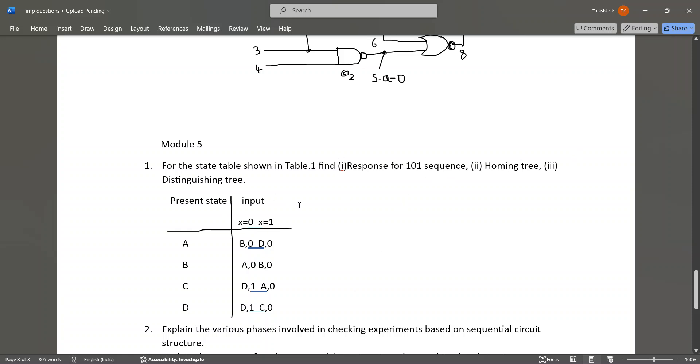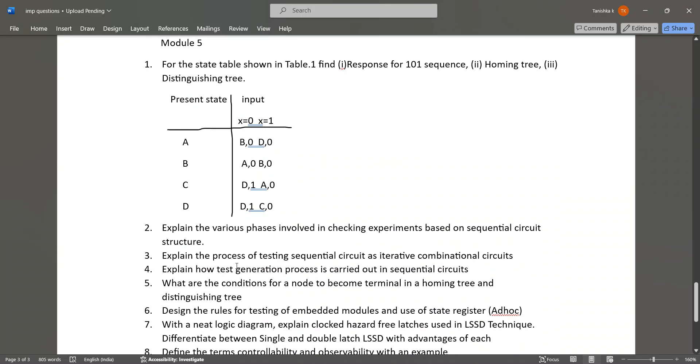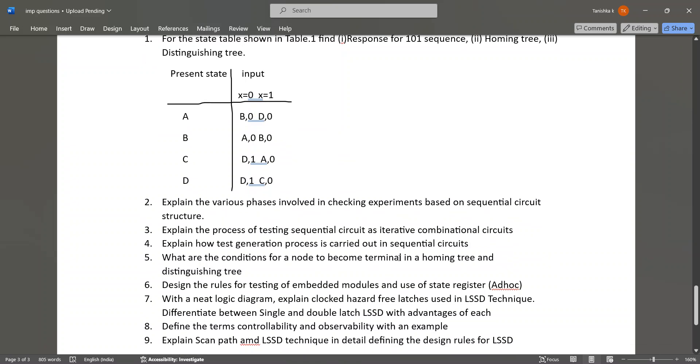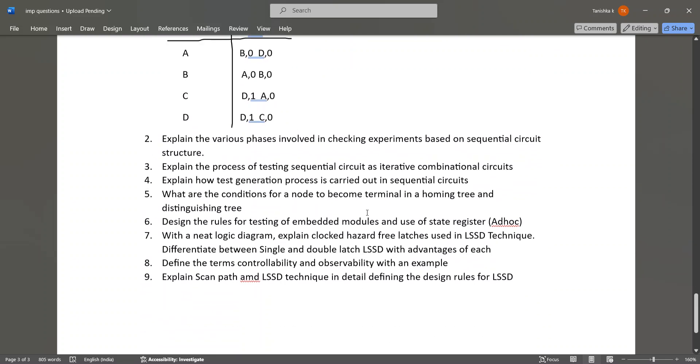Sequence and input is given. Explain the various phases involved in checking experiments based on sequential circuits. Explain the process of testing sequential circuit as iterative combinational circuits. Explain how the test generation process is carried out in sequential circuits. What are the conditions for node to become terminal in homing tree and distinguishing tree?